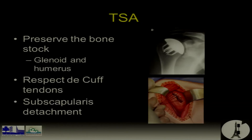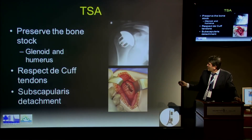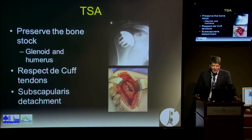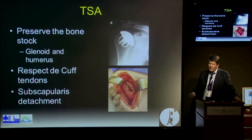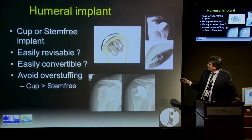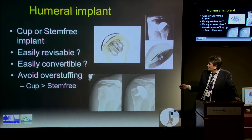If you decide to do a shoulder replacement, you have to preserve the bone stock — very important, because you will likely have to revise this patient. Move to implants that will be easy to revise and convert. When you revise, you'll be able to put a stem implant with the canal still unviolated. Peg implants have less bone loss than keeled implants. You have to respect the cuff tendons, particularly the subscap — if you have a subscap failure, you'll need a reverse shoulder arthroplasty. So for the implant, it's better to use either a cup or a stem-free implant: easy, revisable, convertible.